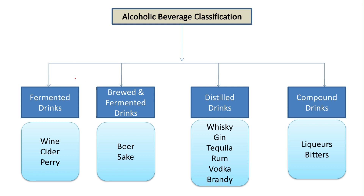Hello guys, and welcome. In today's video we are going to discuss alcoholic beverage classification — how we can classify alcoholic beverages. The benchmark we have taken is the production method: how these beverages are made. Based on that, they can be made by fermentation. Fermented drinks use fruits which have sugar readily available.